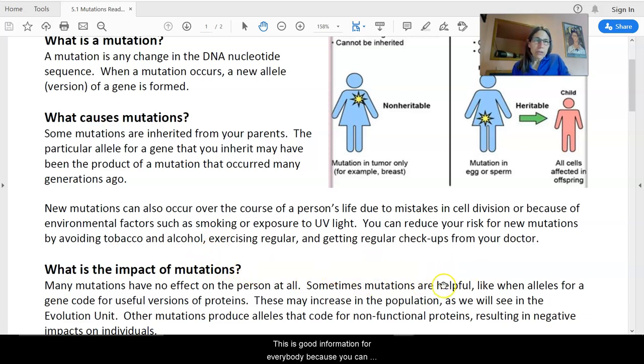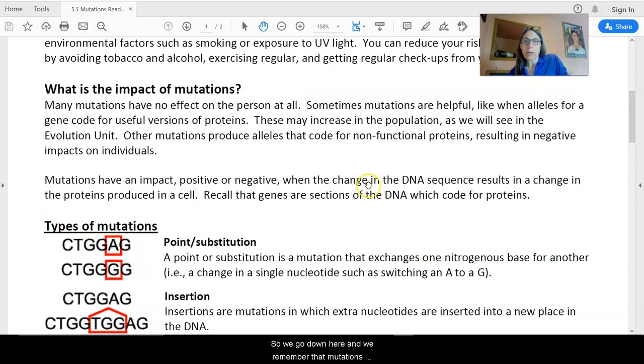And as we talked about earlier, new mutations can occur over the course of a person's life due to mistakes during replication or because of environmental factors. So this is good information for everybody because you can reduce your risk of new mutations by avoiding things like tobacco, alcohol, and get more regular exercise and checkups. So we go down here and we remember that mutations might have no effect at all. They may be helpful when alleles are coding for a new version of a protein that turns out to be beneficial. Or they may code for non-functional proteins resulting in a negative impact. And this is the reason for a lot of genetic diseases, in fact, is that when a protein doesn't work the way it's supposed to, you can get diseases like Huntington's disease, cystic fibrosis, sickle cell disease.